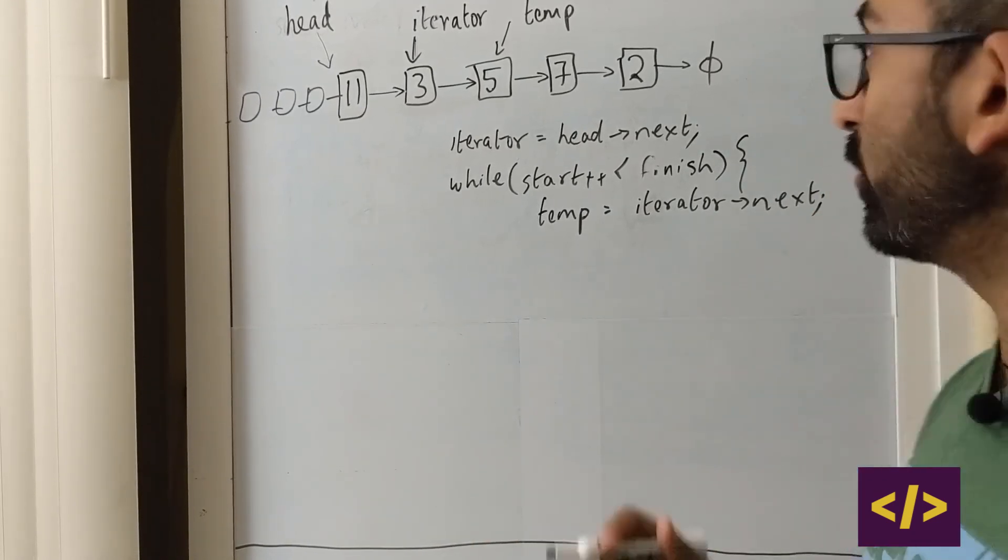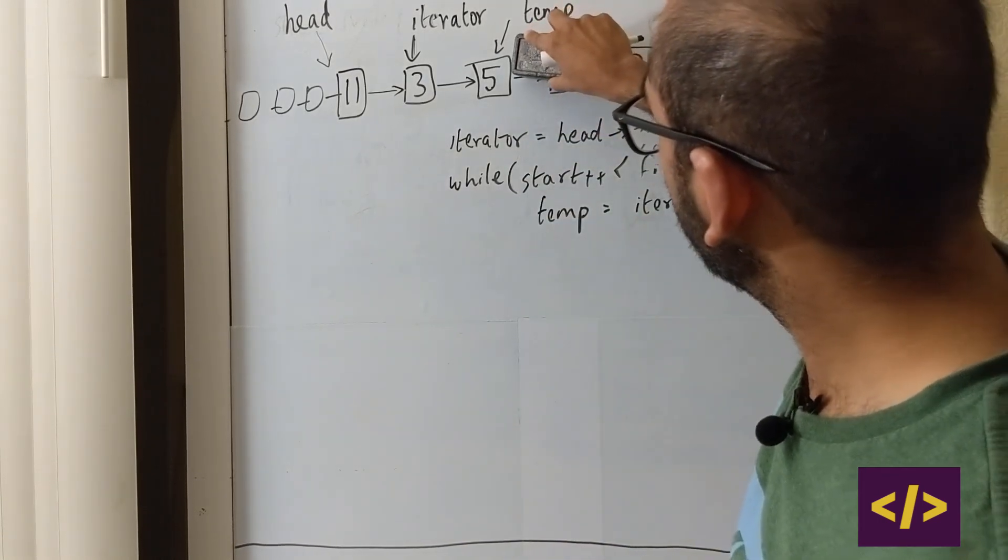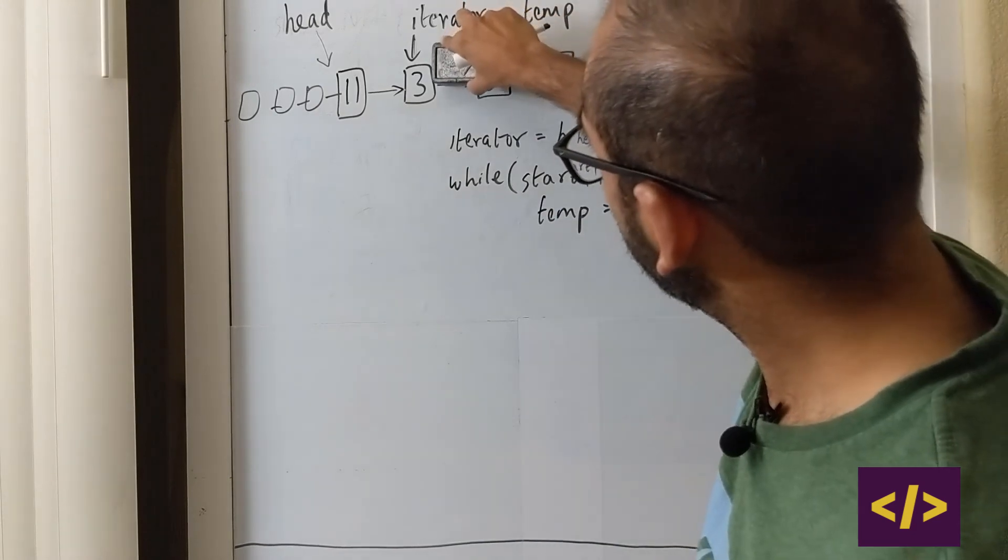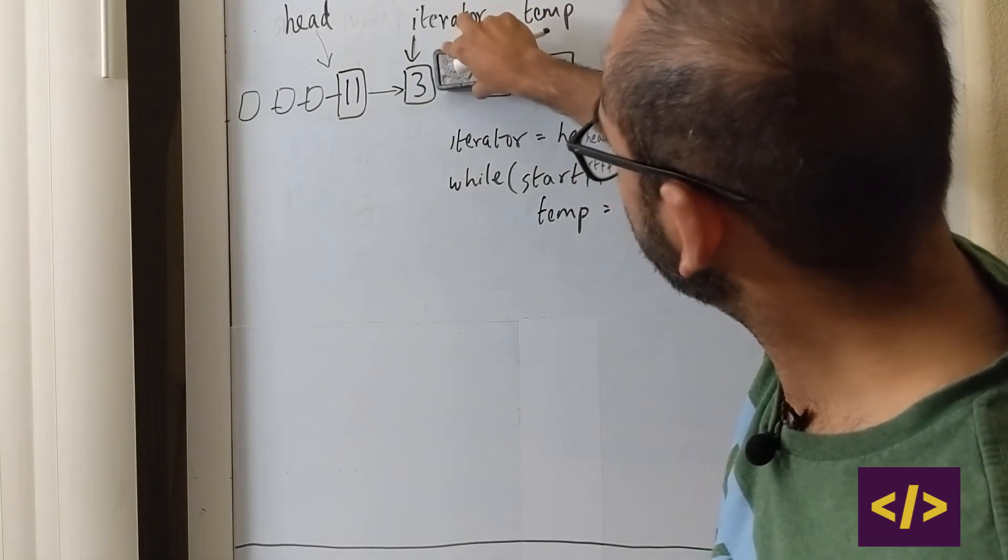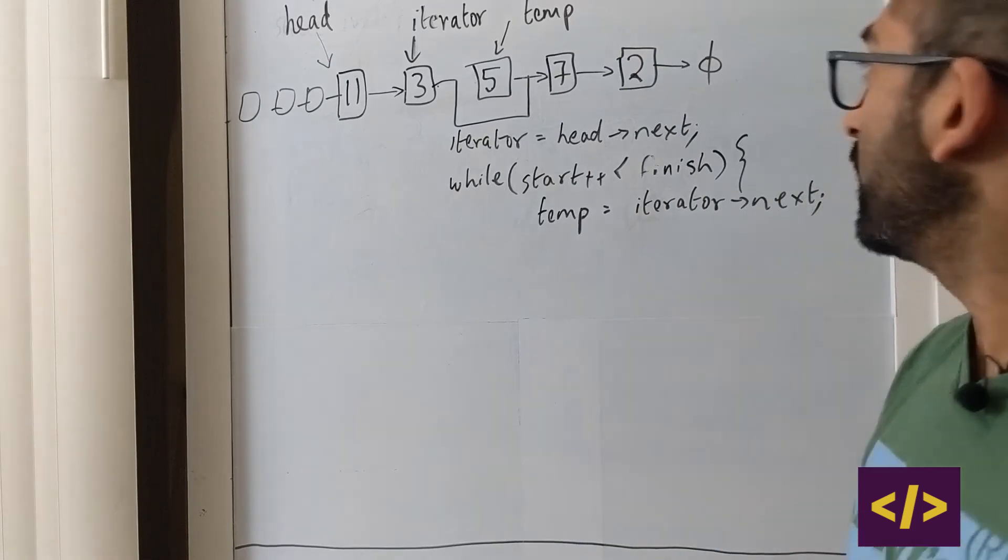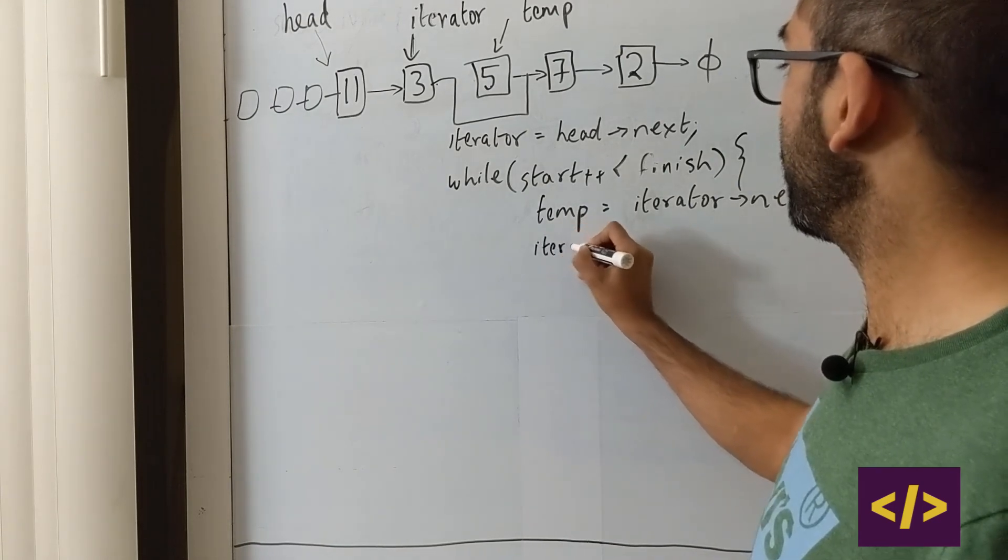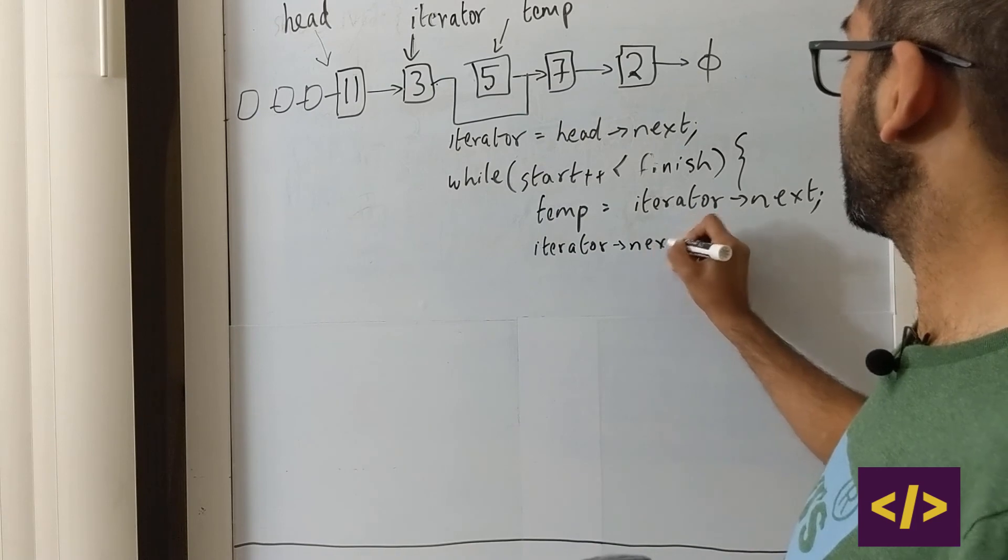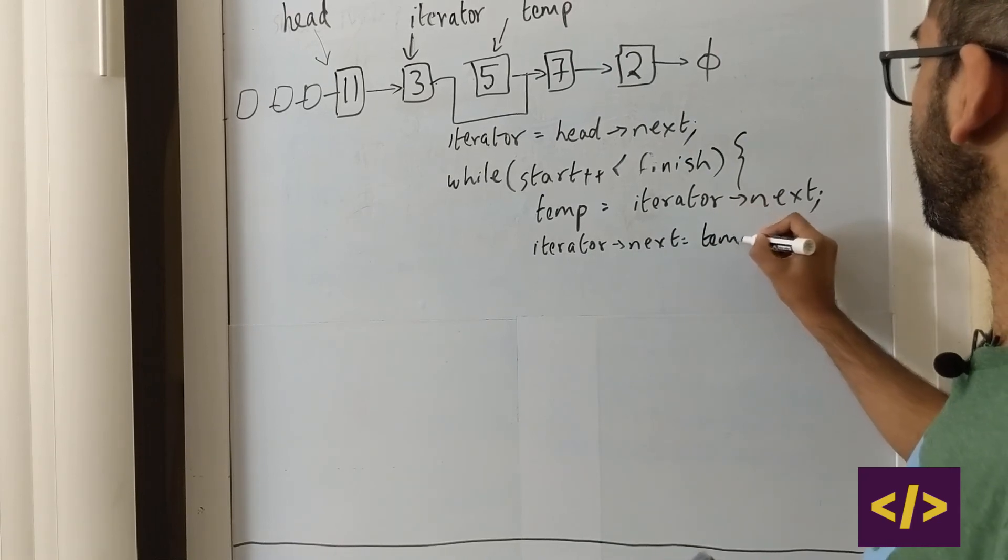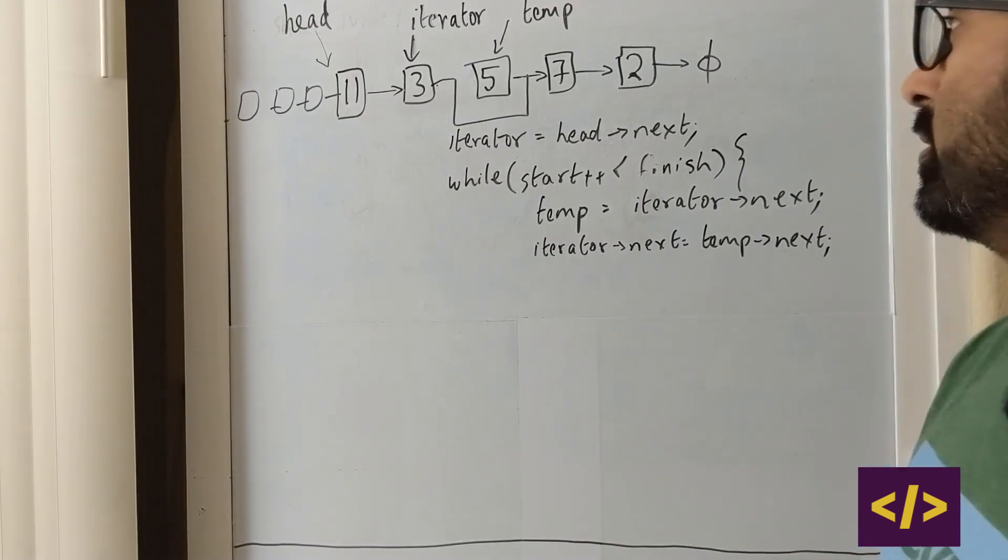And then what's the next thing? So in order to decouple everything, what are the operations we're going to do? The first thing that we need to do is we need to remove this guy's connection and make him point to 7. And now in code, how do we do that? Using these variables. What you're going to do is iterator of next is equal to temp of next. Right? And now that link or chain has been broken. What do we do next?